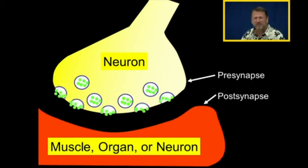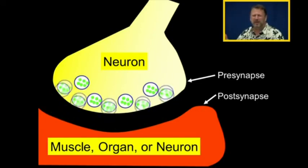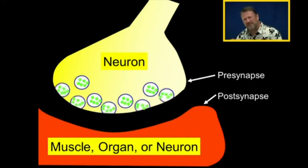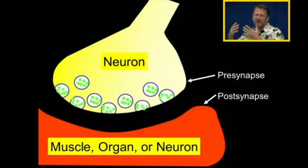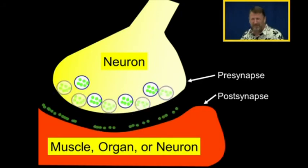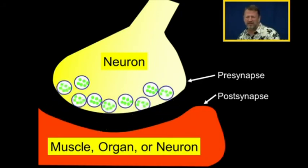The presynapse is where the neurotransmitter is released. And the postsynapse is the place where the neurotransmitter is sensed, that signal is sensed, and then turned into action by either the muscle, the organ, or the neuron. The neurotransmitter is released from the presynapse and sensed at the postsynapse.